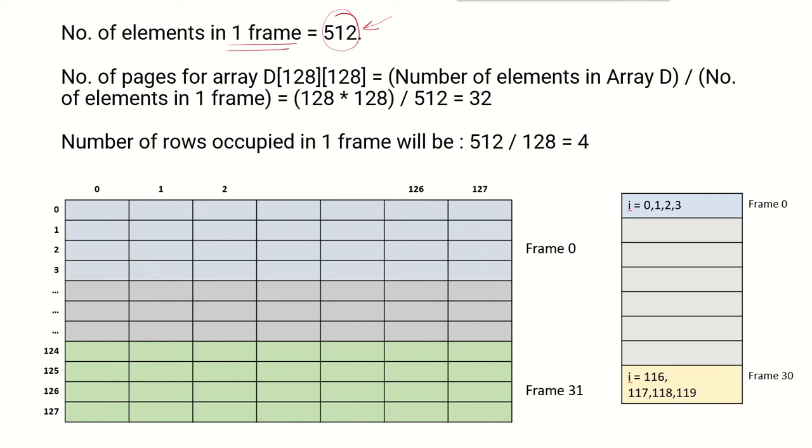Also it is given that the elements are being stored in a row major manner. So let's assume that this is the array D which is 128 by 128, that means 128 rows from 0 to 127 and 128 columns 0 to 127, and they are being stored in row major order.